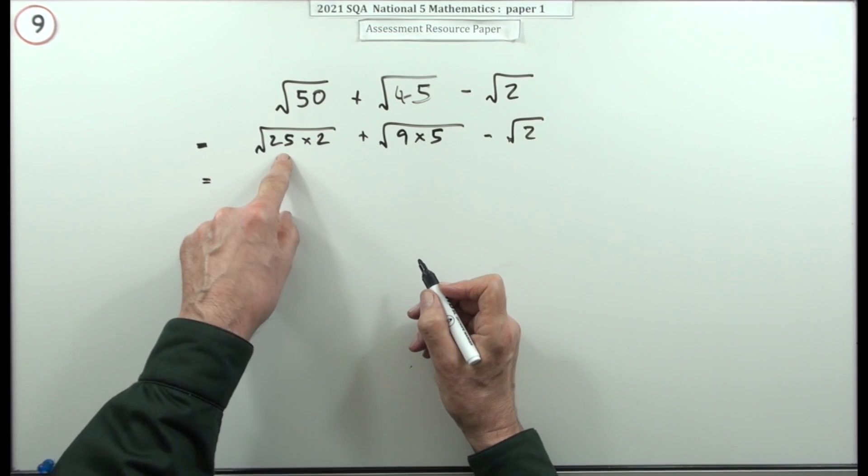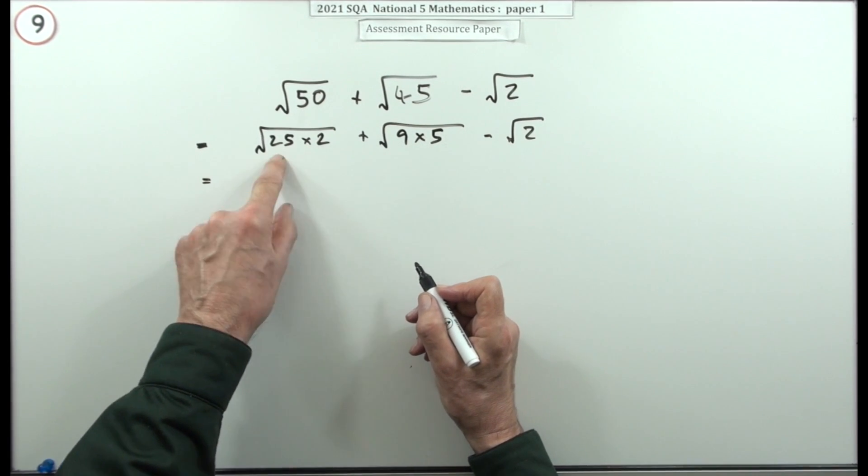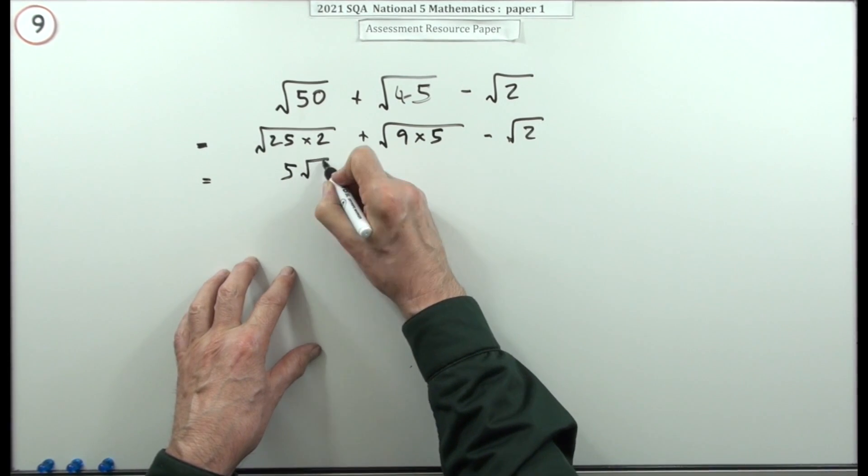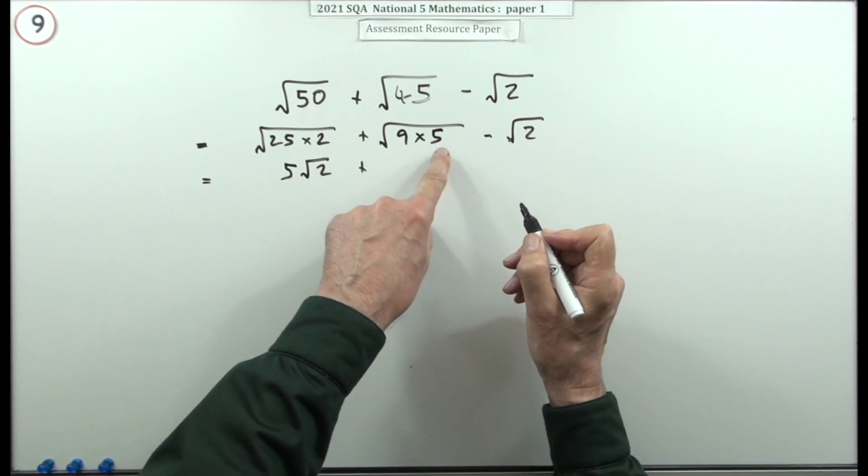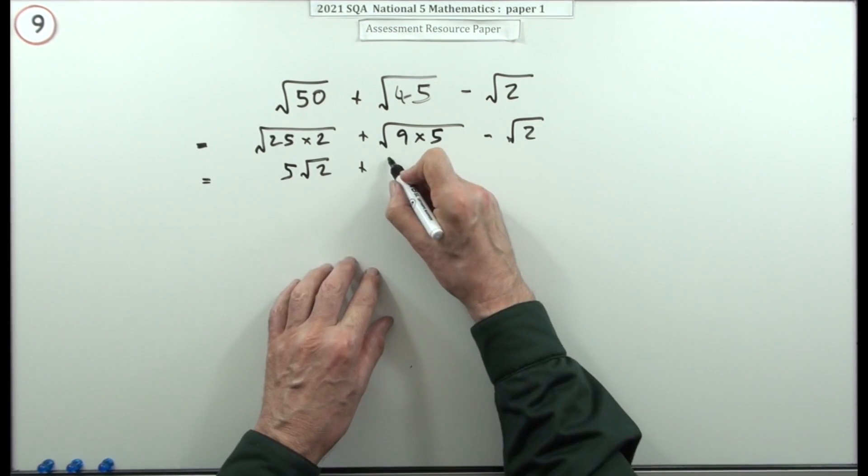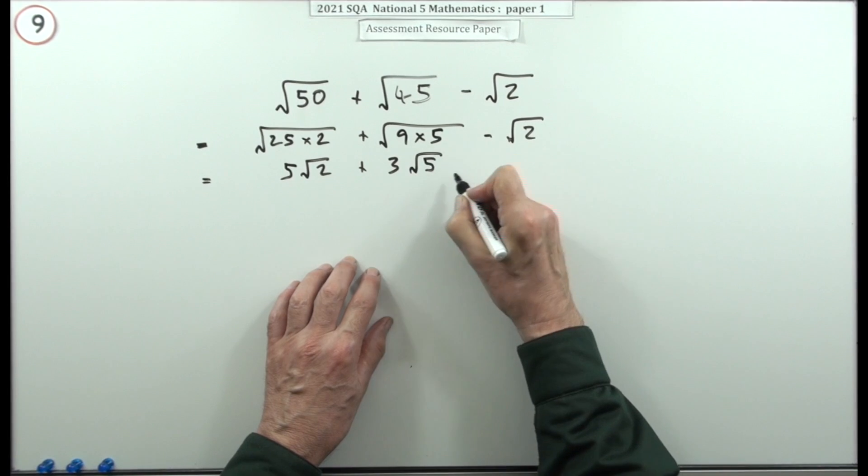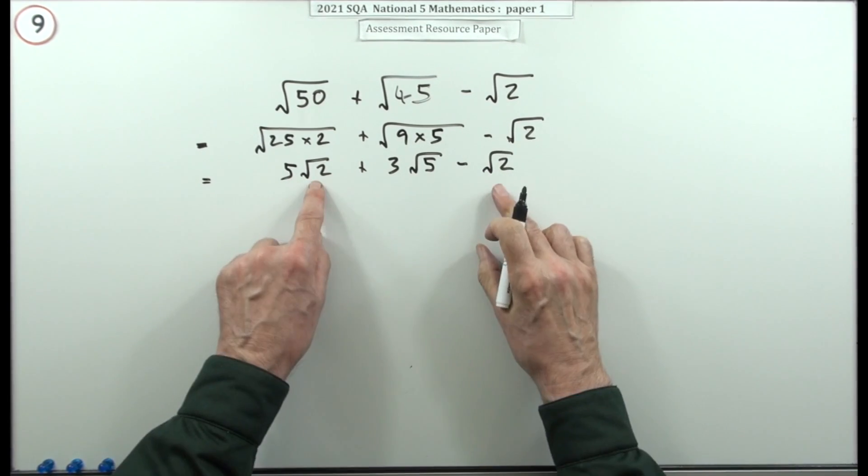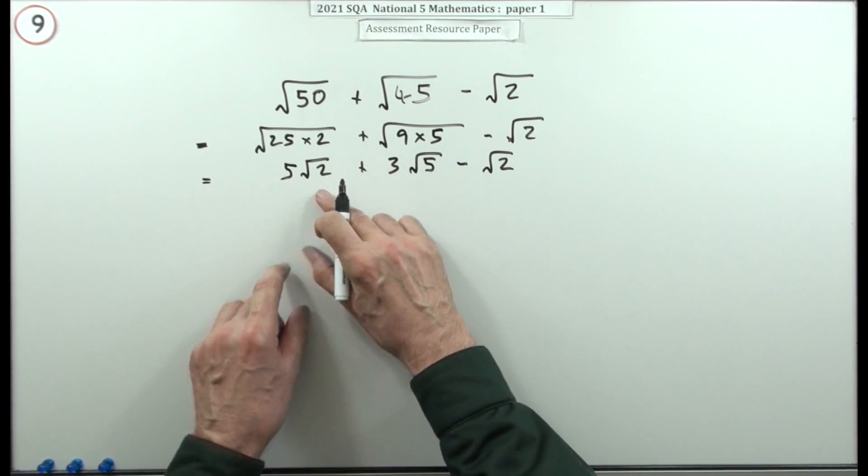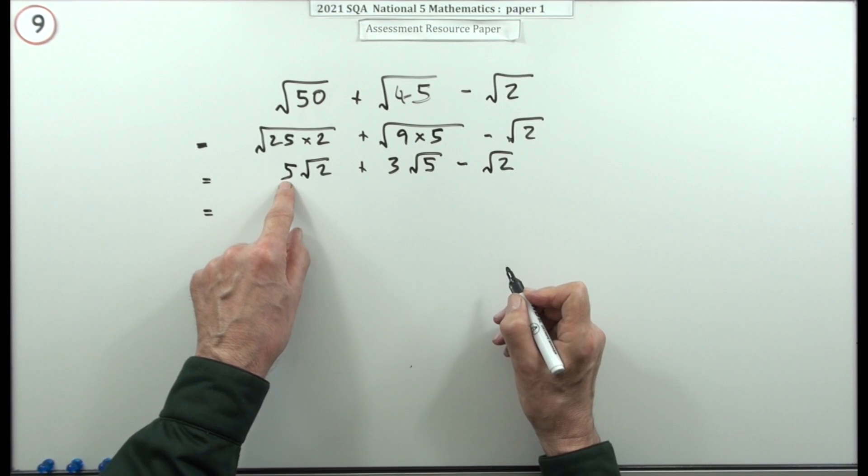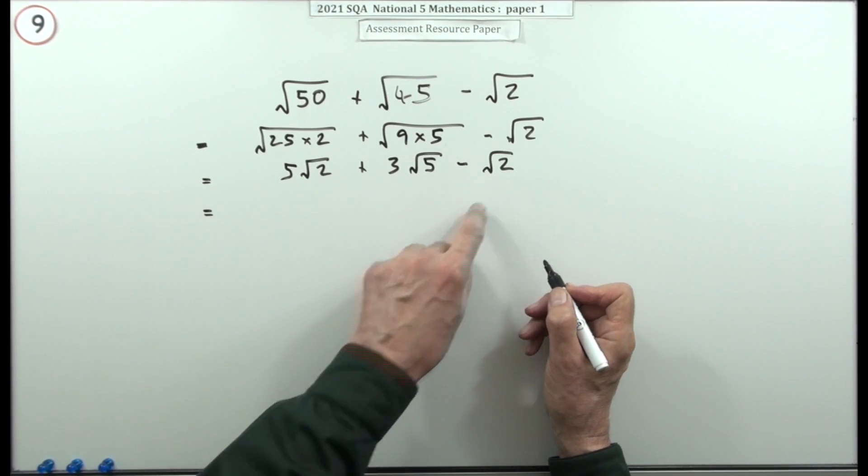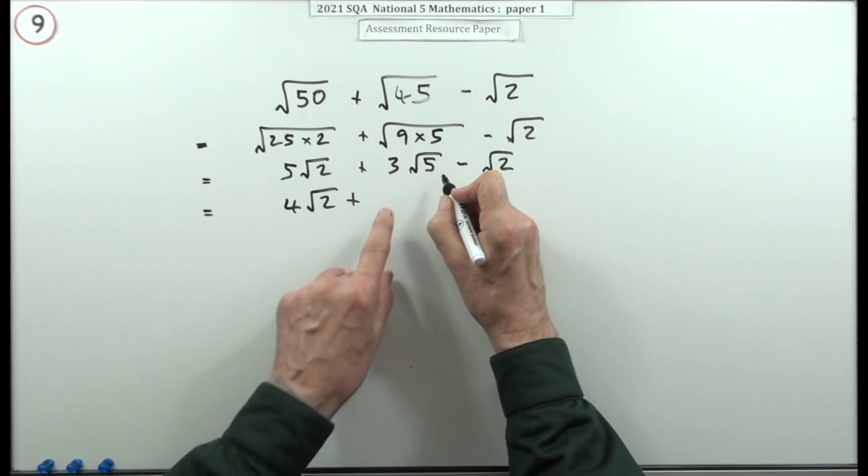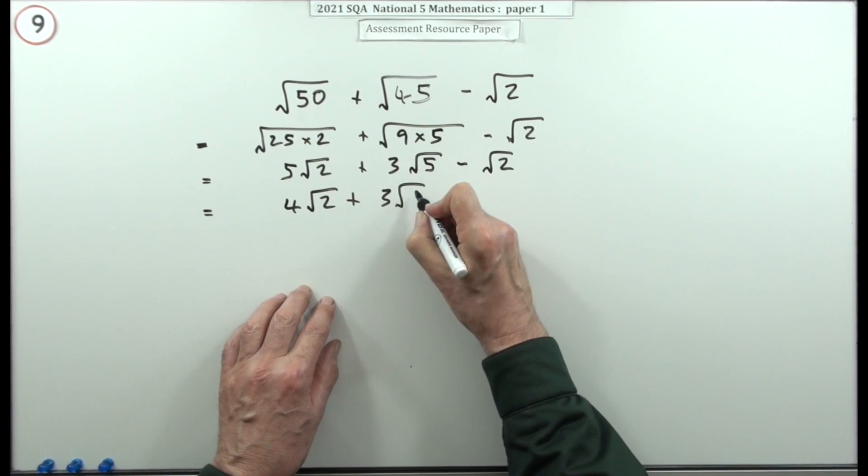So this one becomes root 25 times root 2, so that's 5 root 2. This one becomes root 9 root 5, so that's 3 root 5, minus root 2. Now they're both root 2s so they can go together. So you've got 5 of root 2 take away 1 of root 2 is 4 lots of root 2, and quite separately there's 3 lots of root 5, and that's the best you can do. So that's the simplified expression.